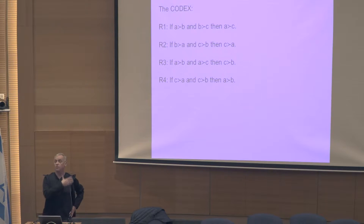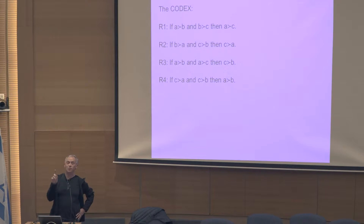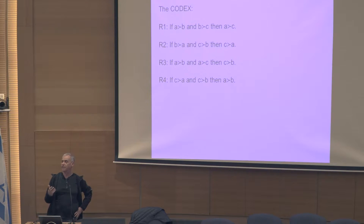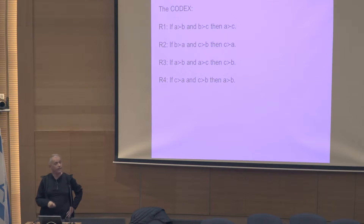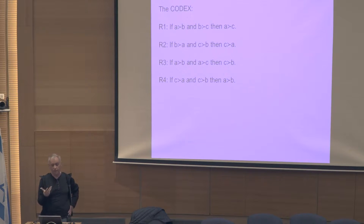R1 and R2 mean that your answer should be transitive or exhibit transitivity. R3 and R4 mean that B should not be in the middle — either A should be in the middle or C should be in the middle. If A is on top, then C should be above B; if C is on top, then A should be above B. So B should not be in the middle. This meaning is not given to the subject, to the candidate. Think about it also with a time limit — if it's very important and you have a few days to think about it, everybody will ask a friend. But think about it that you have also a time limit.